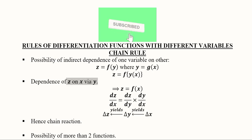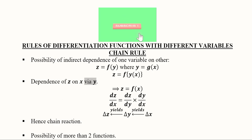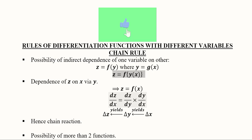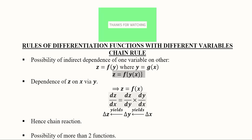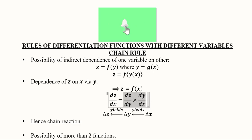We note this via y, so x affects y and y affects z. To develop the chain rule formula, we take the term for x affecting y and the term for y affecting z, and multiply them. The delta y terms cancel out, leaving us with dz over dx, as shown here.